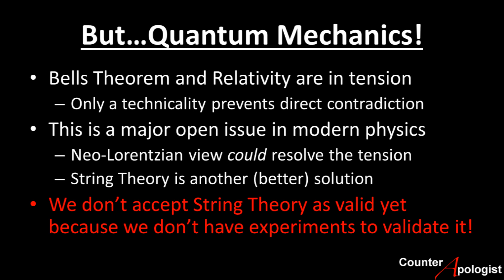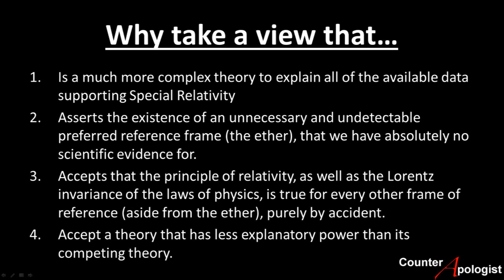The reason we don't just accept string theory and its extra seven or more dimensions of space-time is the exact same reason we don't accept the Neo-Lorentzian view and its privileged reference frame: there's currently no empirical evidence for its existence and no experimental tests to verify it. Science requires empirical data to validate a theory, because without it you can always add unfalsifiable conjecture to get any result you want. So why would philosophers like William Lane Craig endorse a theory that: one, is more complex to explain available data; two, asserts the existence of an unnecessary and undetectable preferred reference frame; three, accepts that the principle of relativity and Lorentzian invariance holds for every reference frame aside from the ether, purely by accident; and four, has less explanatory power than its competing theory?